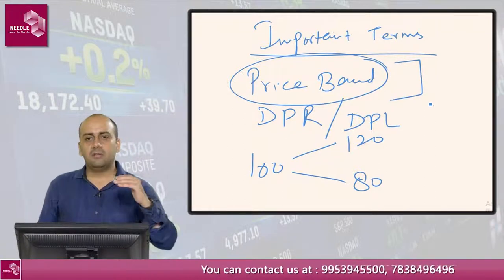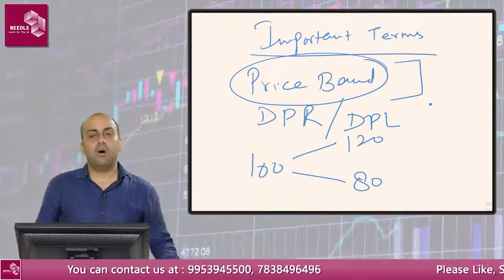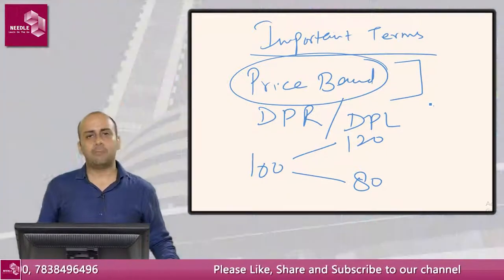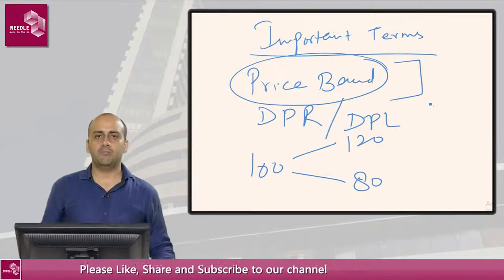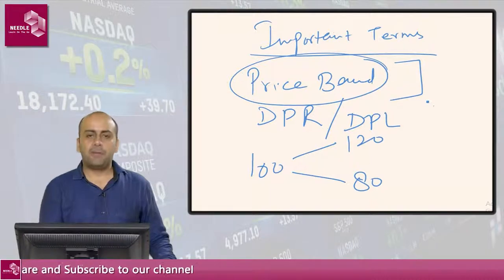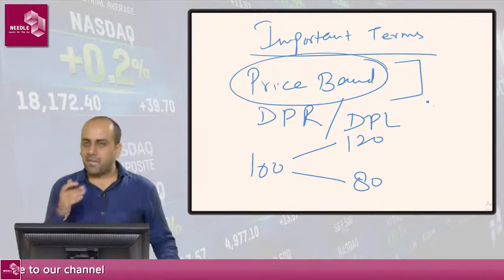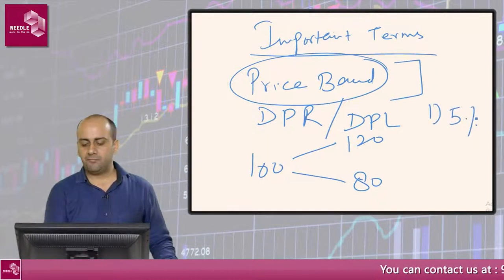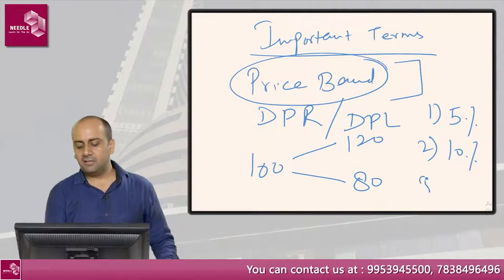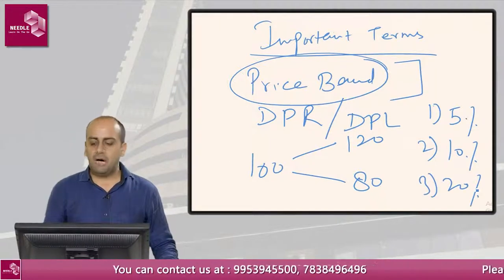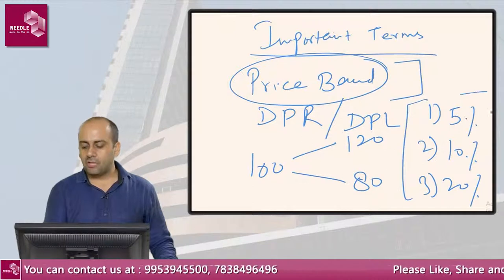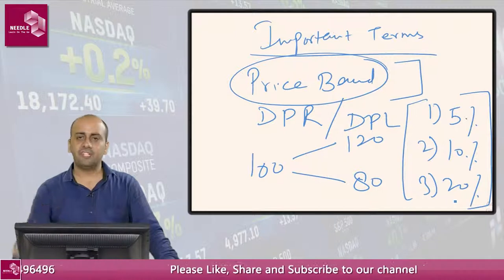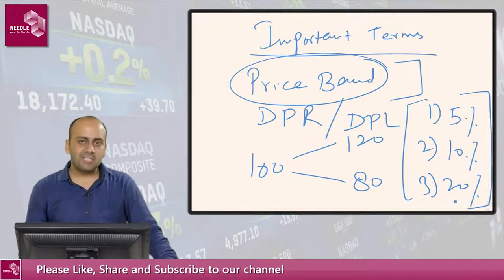The upper band is how much a stock can go up today, and the lower band is how much it can go down. In India, price bands are divided into three categories: 5%, 10%, and 20%. So a stock can move up or down by either 5%, 10%, or 20% in a day.